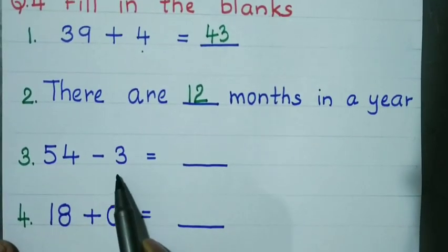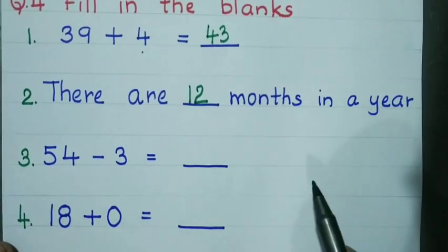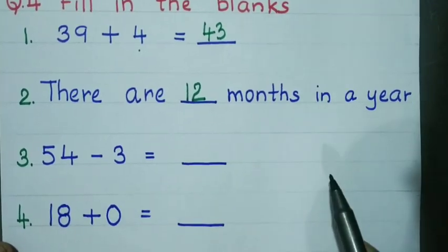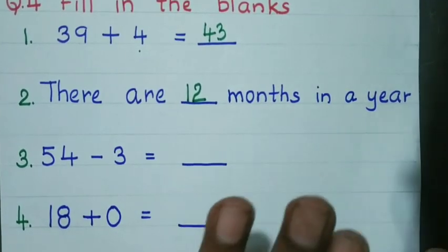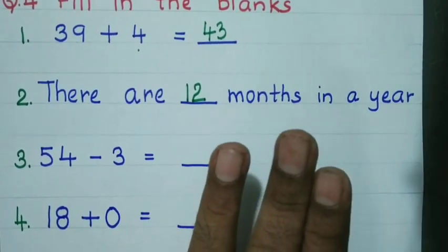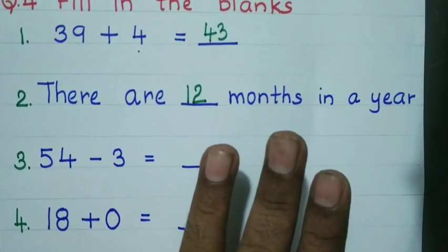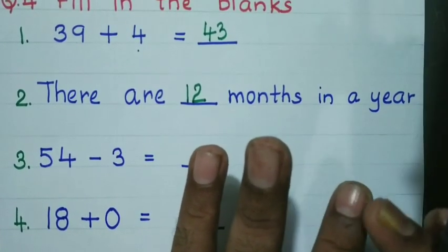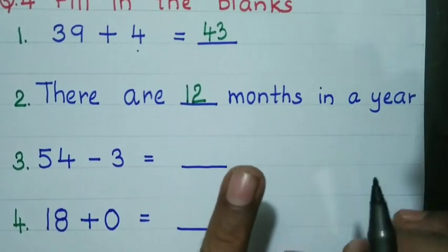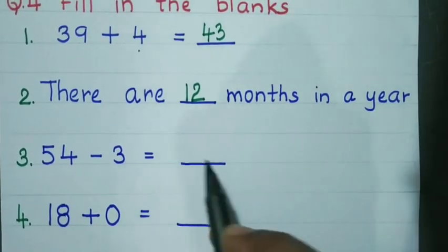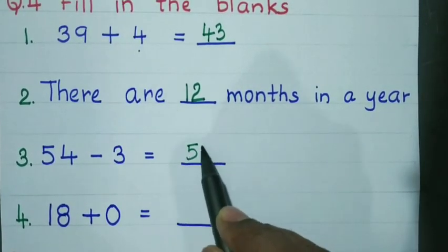54 minus 3. Keep the first number 54 in your mind and show 3 fingers. Minus means backward count: 53, 52, 51. So, 51 is the answer.